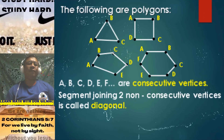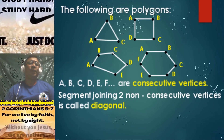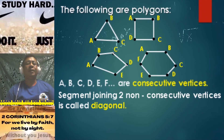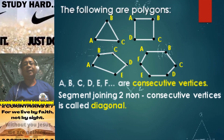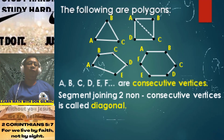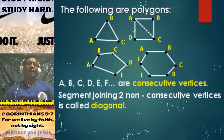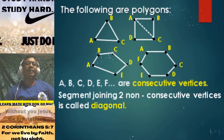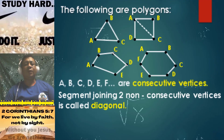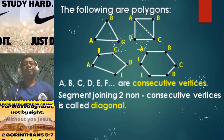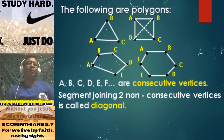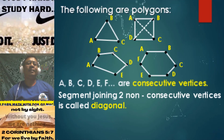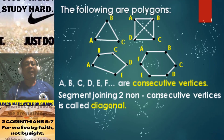We also have the segment joining two non-consecutive vertices. It is simply called a diagonal. If we are to join vertex A to vertex C, the segment joining vertex A and vertex C is what we call a diagonal. Also, if you are to join vertex B and vertex D in the given quadrilateral, we also have another diagonal.